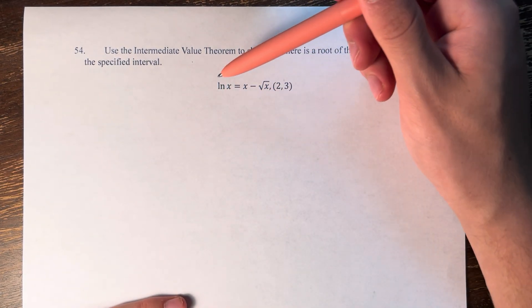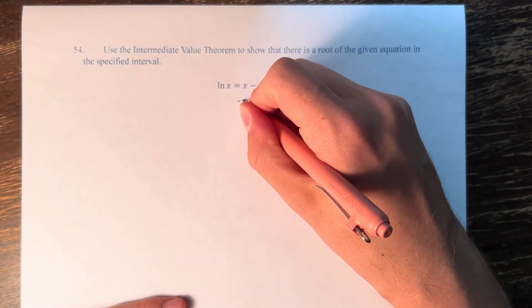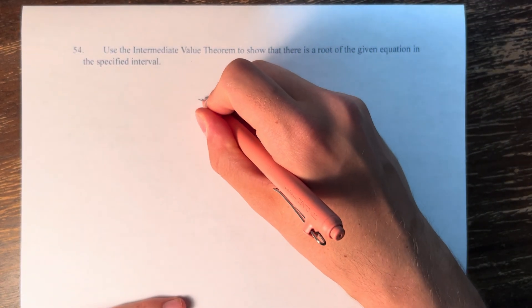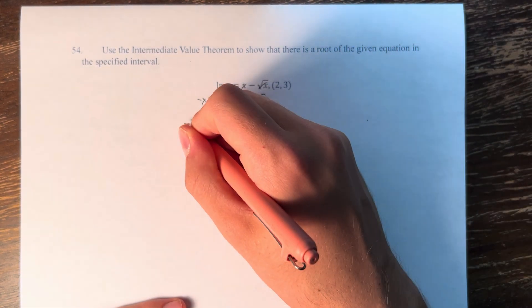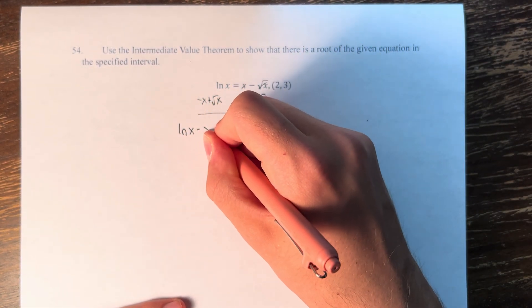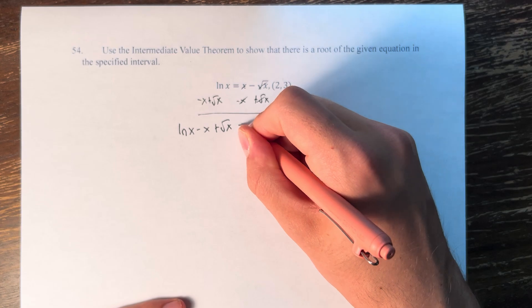What we have to do is turn this into a function that's equal to zero. If we subtract from both sides, we're left with ln x - x + √x = 0.